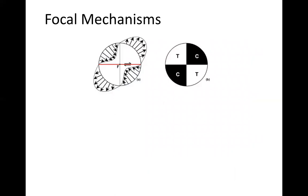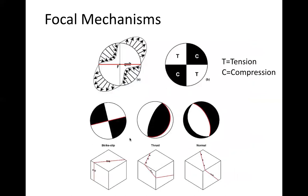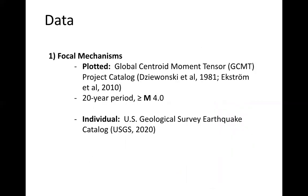As a quick reminder, focal mechanisms are stereographic representations of two mathematically equivalent fault planes over which slip occurred in an earthquake, and also indicate the type of slip that occurred. In the case of a strike-slip fault, the highlighted fault is the dextral sense, and shaded regions indicate compression whereas non-shaded regions indicate tension. Each of the primary fault types can be expressed by these beach balls, and oblique-slip is any combination of the dip-slip mechanisms with strike-slip. We'll be plotting focal mechanisms from the global centroid moment tensor (GCMT) project catalogs — a 20-year period from January 1st, 2000 for all events of magnitude 4.0 and greater.